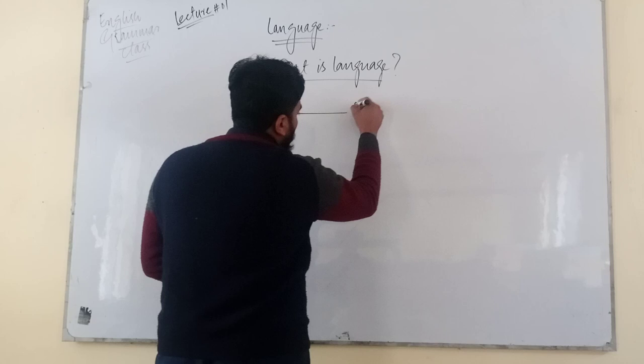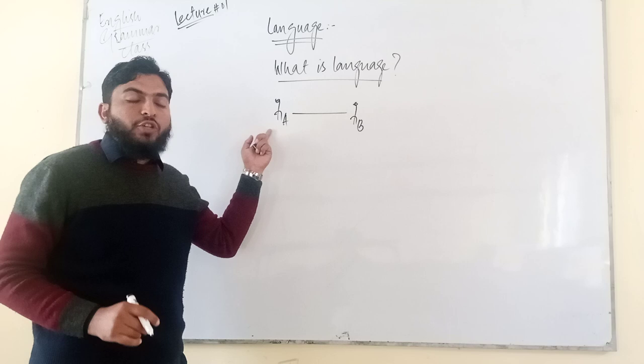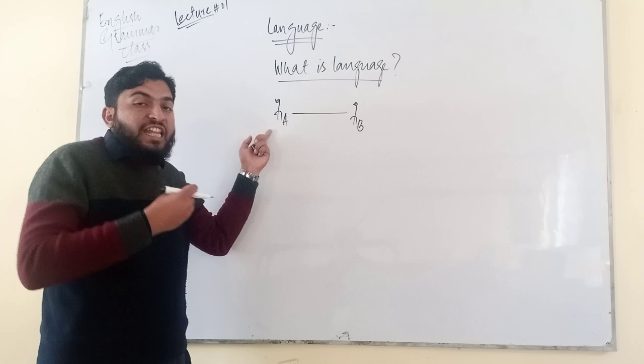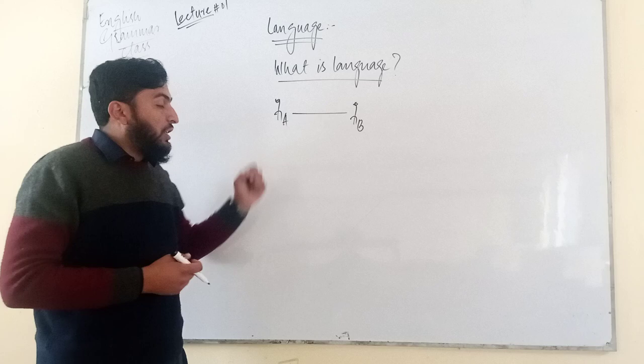Dear fellows, language - I usually give one example. This is participant A. Participant اس شخص کو ہم کہتے ہیں جو کسی بھی زمان میں بحیثیت بولنے والا یا بحیثیت سننے والا یا بحیثیت لکھنے والا یا بحیثیت پڑھنے والا اس کو ہم participant کہتے ہیں.